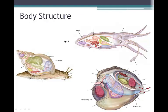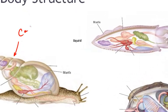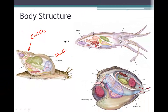The mantle is a membrane that surrounds the internal organs of a mollusc. If a shell is present, the mantle secretes a calcium carbonate substance to form the shell. So in our clam and our snail, this outer shell would be calcium carbonate. The mantle cavity is directly underneath the outer shell — it's that membrane.